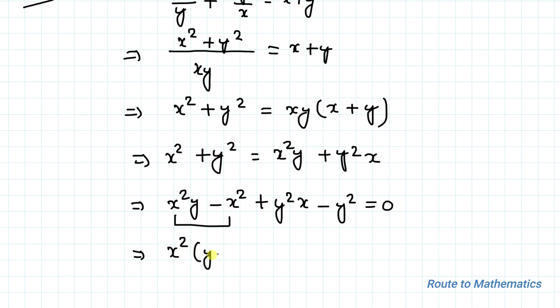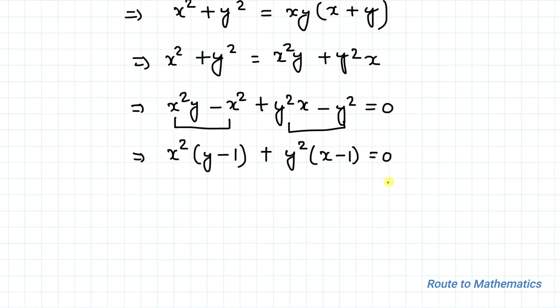We have x squared multiplied with y minus 1 plus y squared multiplied with x minus 1 equals 0. As given in the question, both x and y are positive integers, so x squared and y squared must not be equal to 0. In order to satisfy the equation, y minus 1 and x minus 1 must be equal to 0.